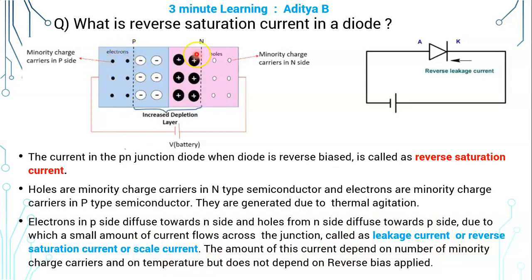The number of minority carriers generated depends on the temperature and hence the magnitude of this reverse saturation current also depends on the temperature, but does not depend on the magnitude of the reverse bias voltage applied.